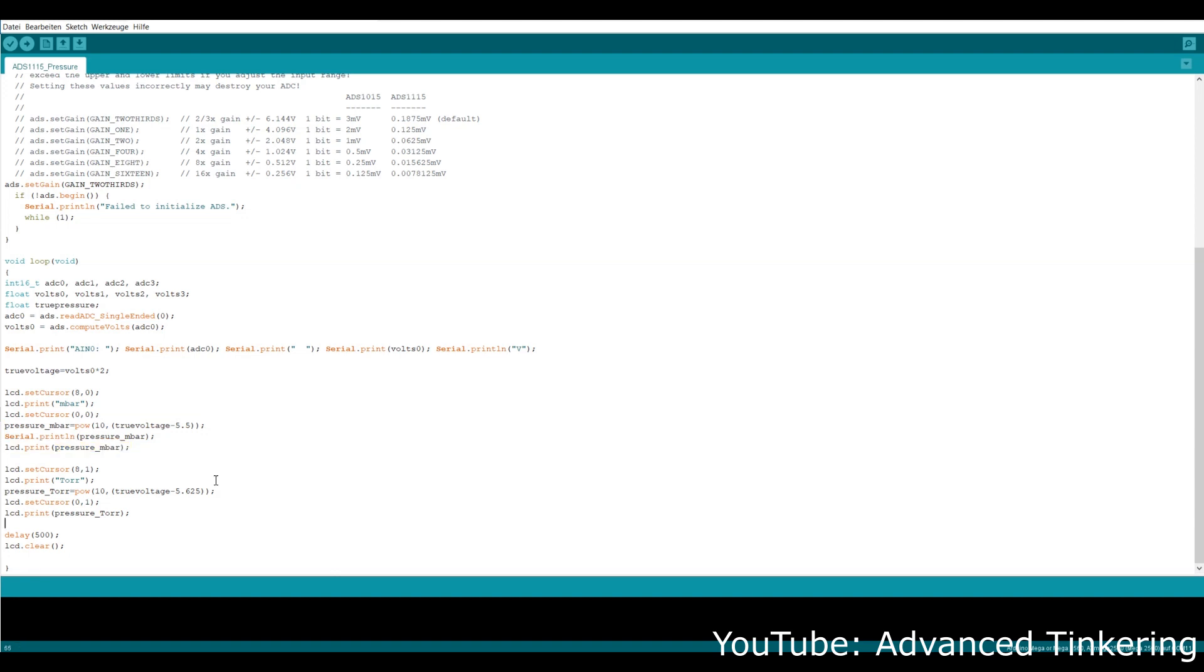In the next case I'm just calculating the pressure in Torr and sending it to the LCD display. That means that you can simply change the unit to whatever unit you want by changing the constant in the software.